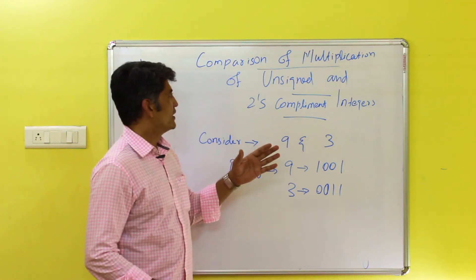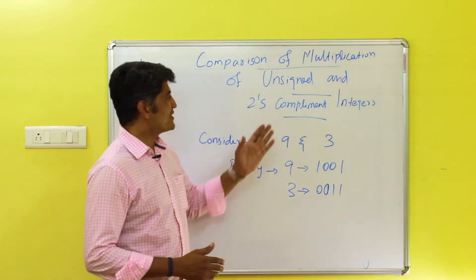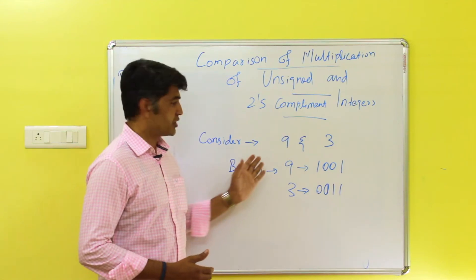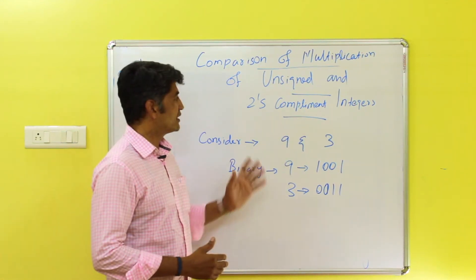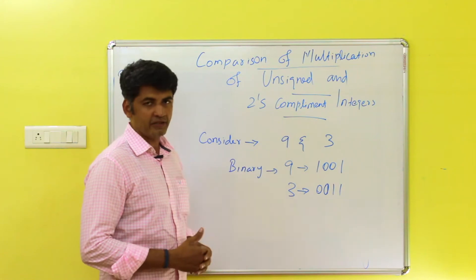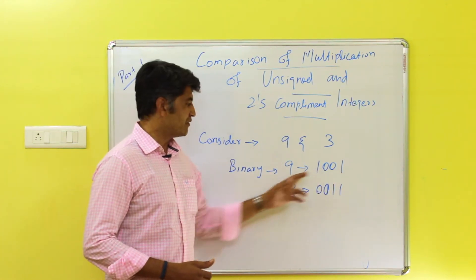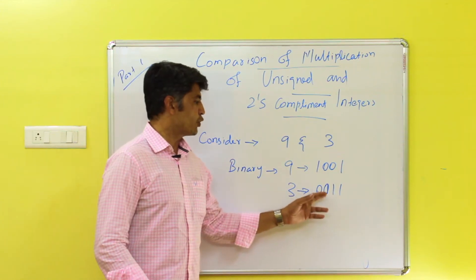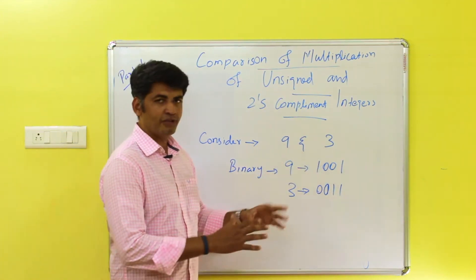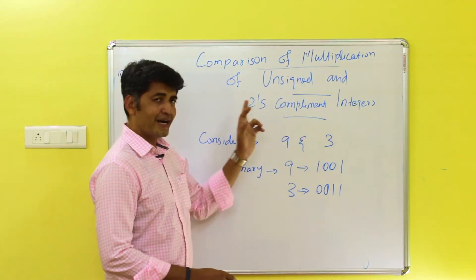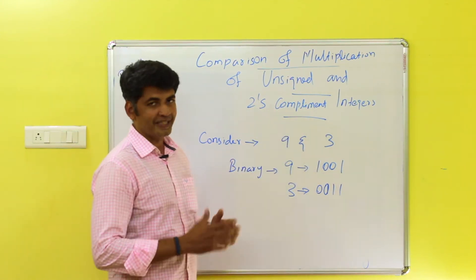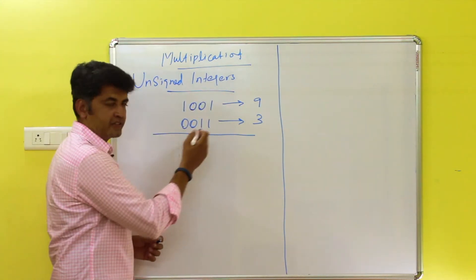In this video we're going to see the comparison of two multiplication methods: multiplication of unsigned integers and multiplication of two's complement integers. We'll use the values 9 and 3 as an example. The binary value for 9 is 1001, and the binary value for 3 is 0011. We are going to multiply these two values using both methods.